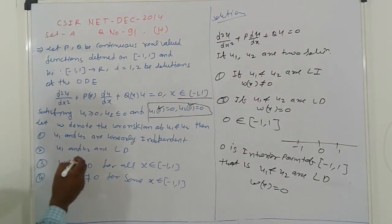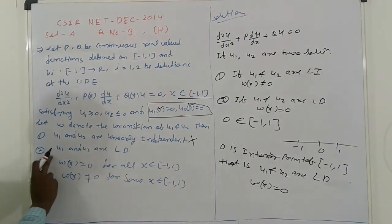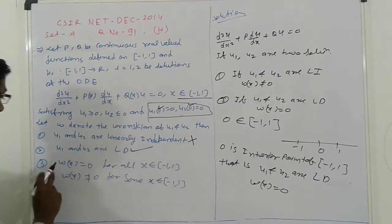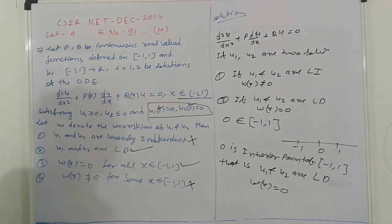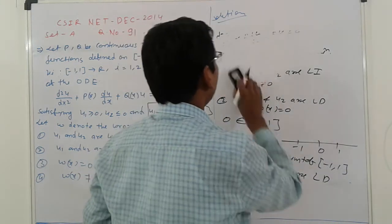Now what is your options? U1 and U2 are linearly independent. That is wrong. Next, U1 and U2 are linearly dependent. Raskian is 0. I mean third, fourth option is wrong. Otherwise you can check that format.